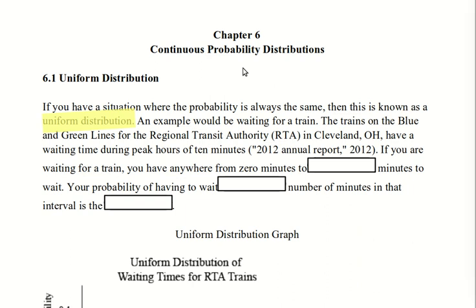If you're waiting for a train, you have to wait anywhere from 0 minutes to 10 minutes. Your probability of having to wait any number of minutes in that interval is the same. Now, of course, this is assuming that you're not referring to a timetable, that you don't notice all the clues around you.